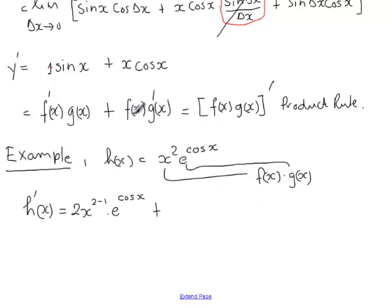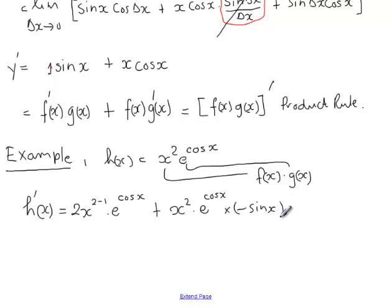Simplifying and writing the whole expression nicely: h'(x) = 2x·e^(cos x) plus x²·e^(cos x)·(−sin x). Be careful that the minus sign does not form part of the argument of sine. That is the application of the product rule combined with the chain rule.